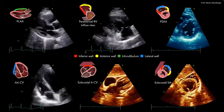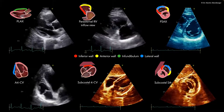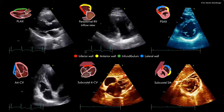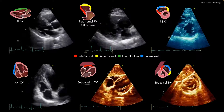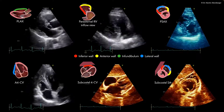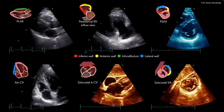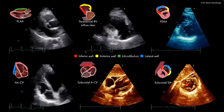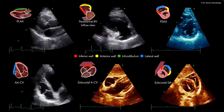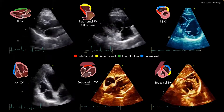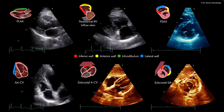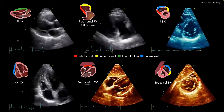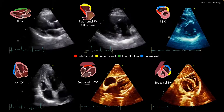In a subcostal view, you also have another possibility to visualize parts of the right ventricle, which will be mostly the inferior wall, or depending on how you tilt the transducer, probably also the lateral wall of the right ventricle. When you rotate the transducer for a subcostal short axis view, the left ventricle is in the center, and we have again several walls: the inferior wall, the anterior wall, and the free lateral wall of the right ventricle.